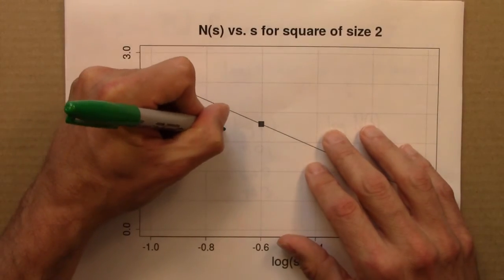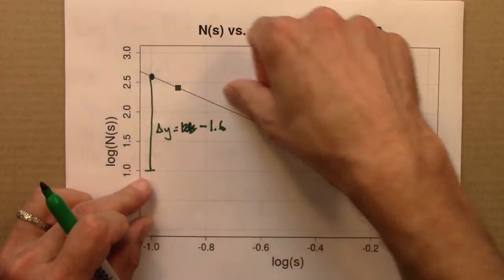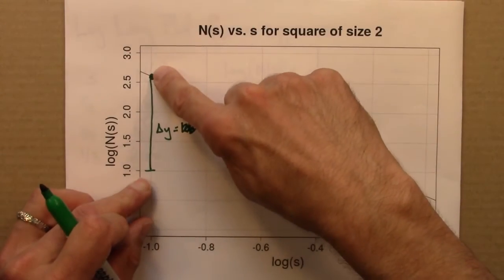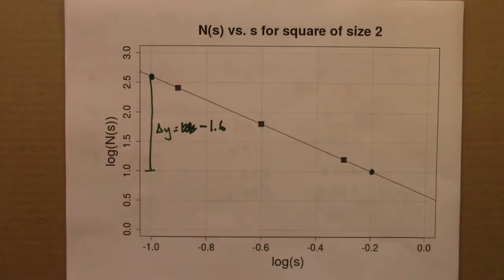And that's minus 1.6. Why is it minus? Because it's going downhill. The change in y from here to here is negative.